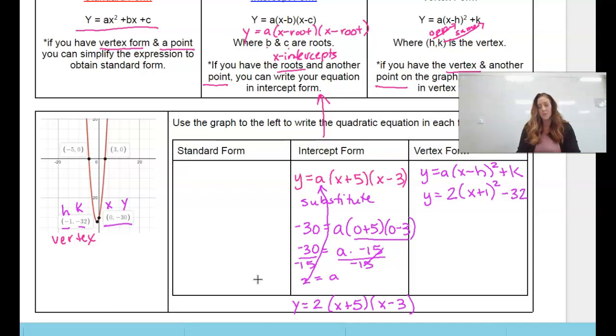Like I said, if you did vertex form first, then you would have to plug in your point, just like we did on intercept form, and find the a value.